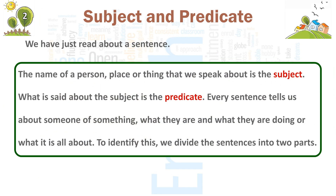The name of a person, place or thing that we speak about is the subject. What is said about the subject is the predicate. Every sentence tells us about someone or something — what they are and what they are doing, or what it is all about. To identify this, we divide the sentence into two parts.